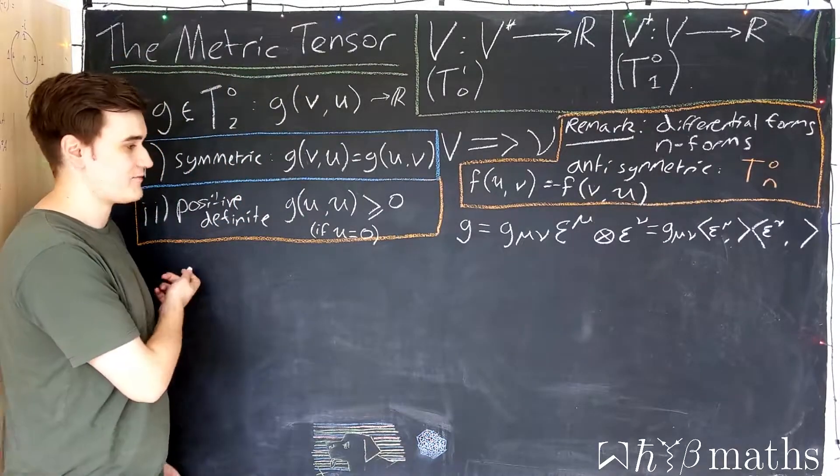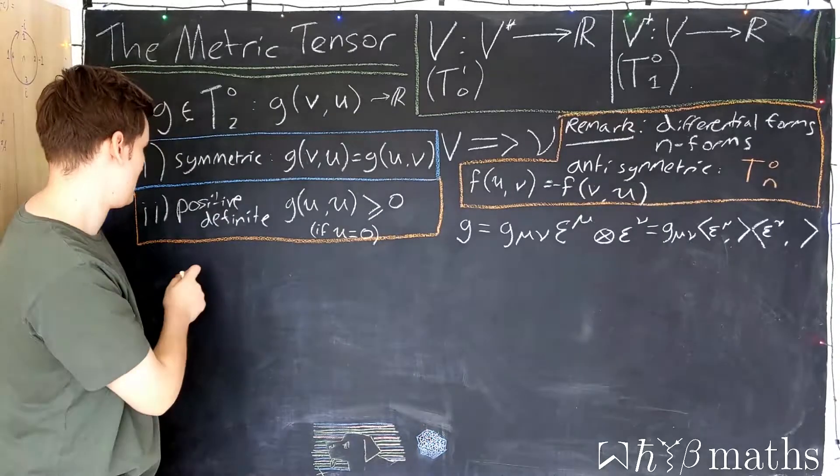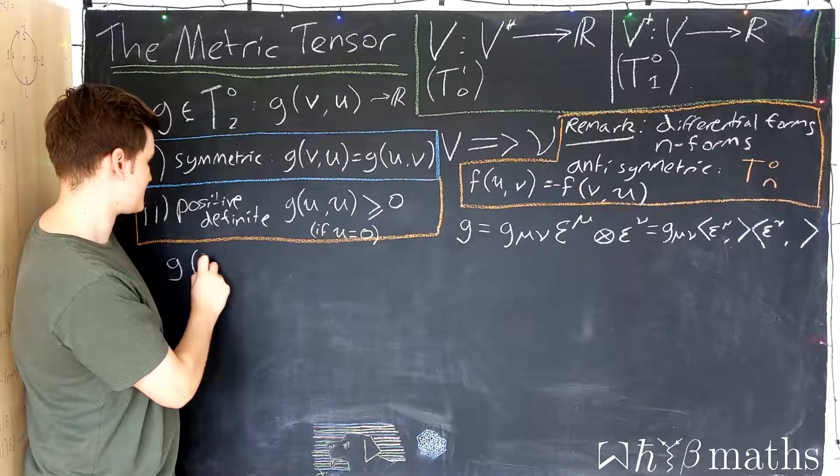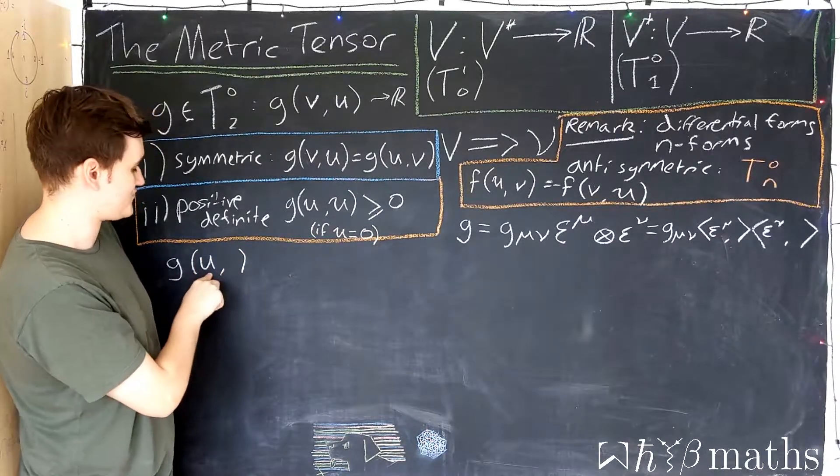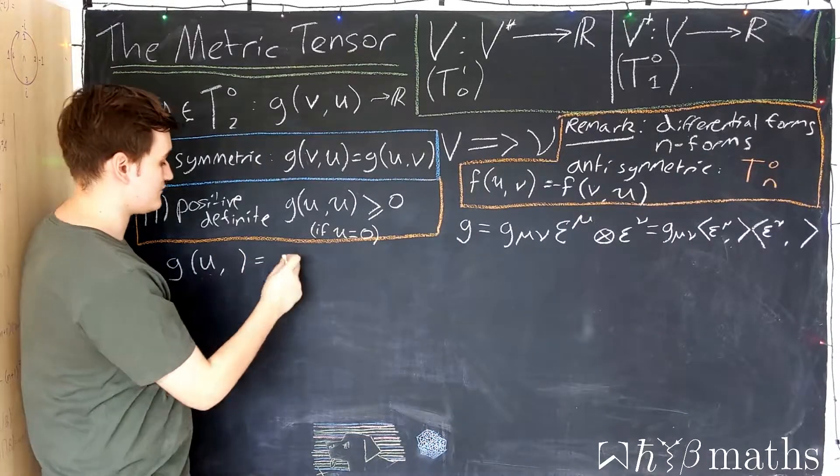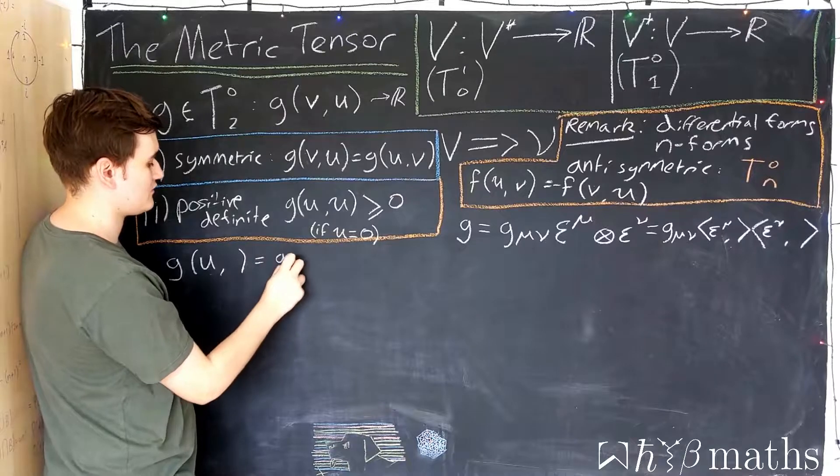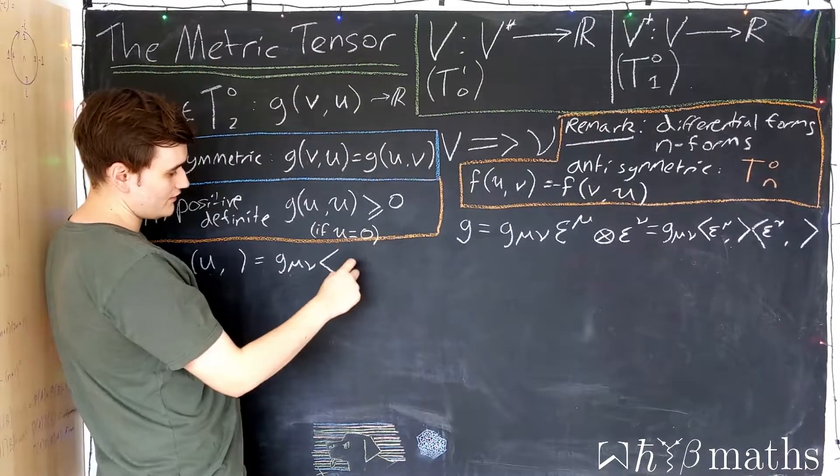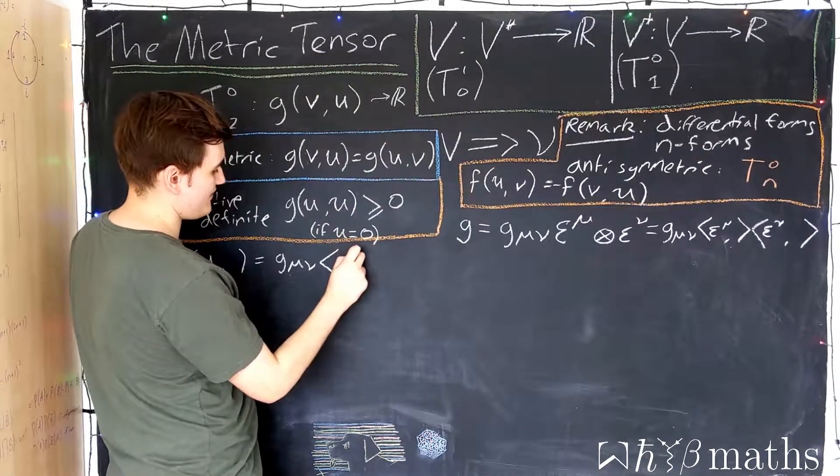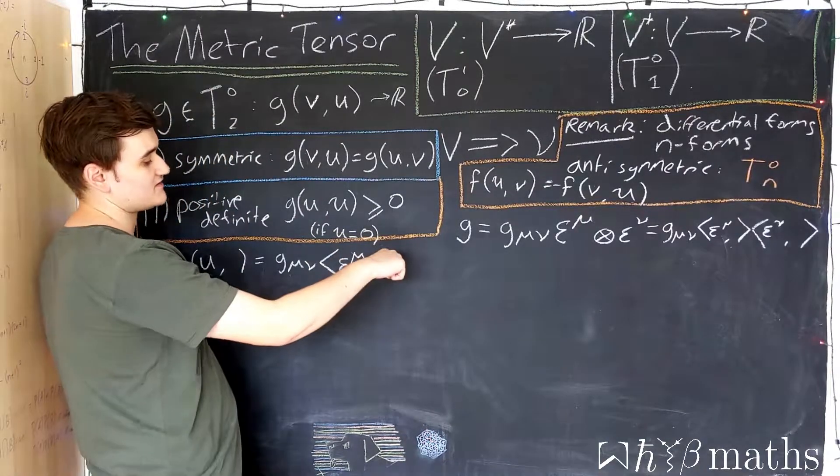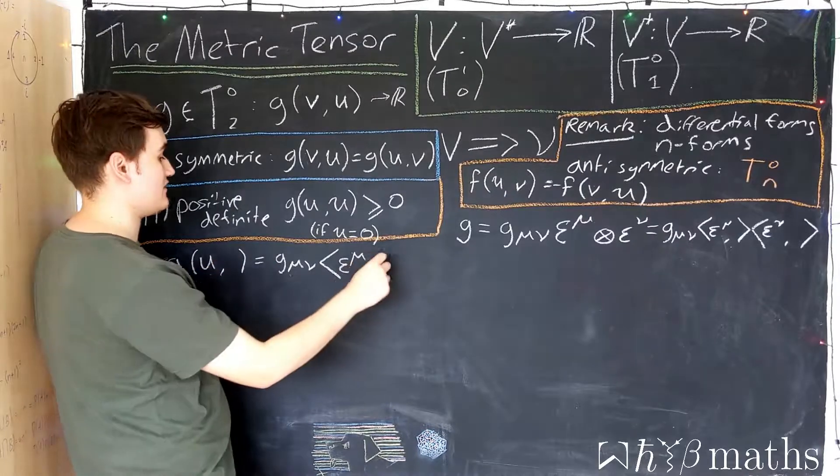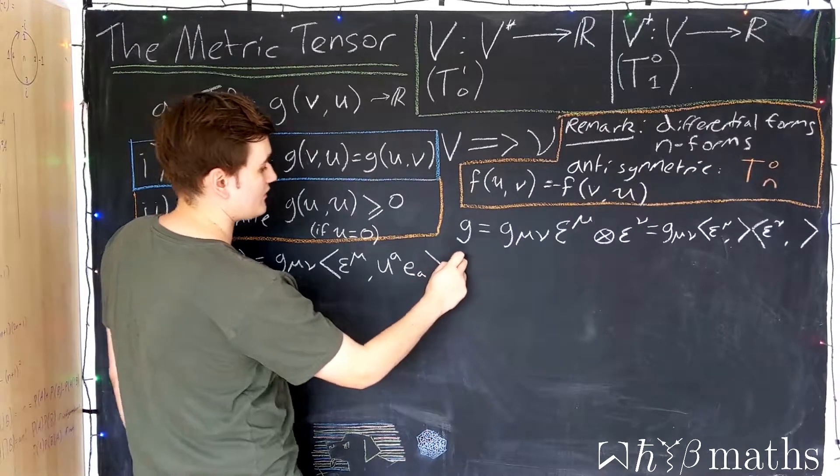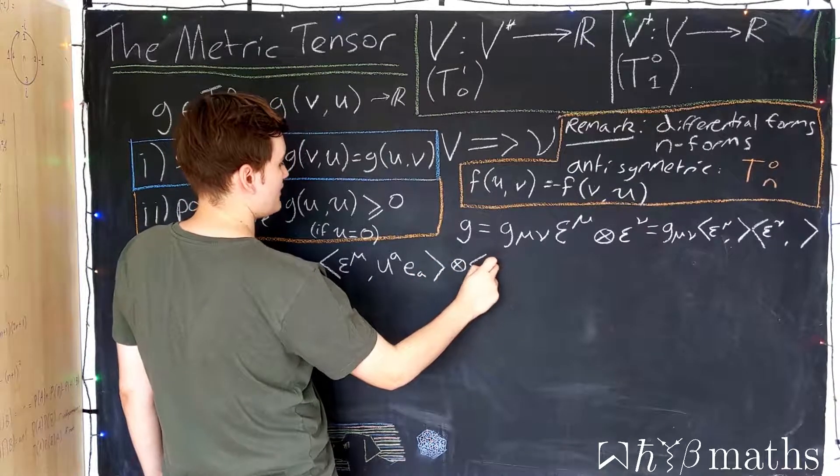So we know that this is waiting to eat two vectors and give us a real number. But now I just want to consider what happens if we only feed the metric a single vector. So that would be the following object: if I now use a function notation, we give the metric one vector input. So we can write this in terms of our basis as the metric components, and now we have the first map, and I'm going to feed the first vector into this map and express this vector in a basis. So that's going to be u, say, and then we just have a second map which has no input.